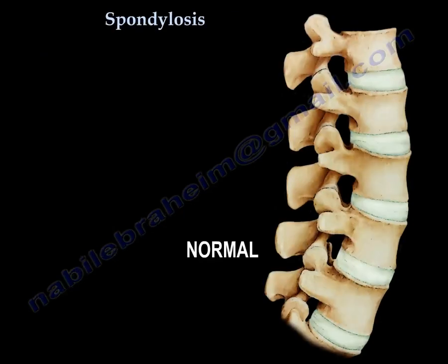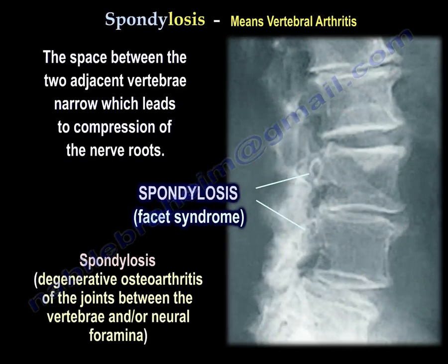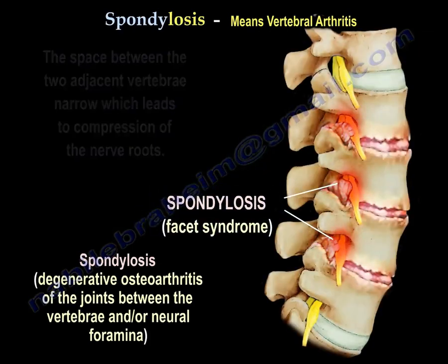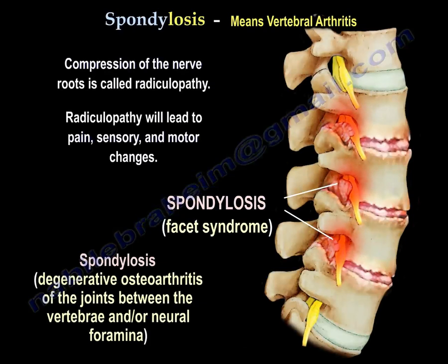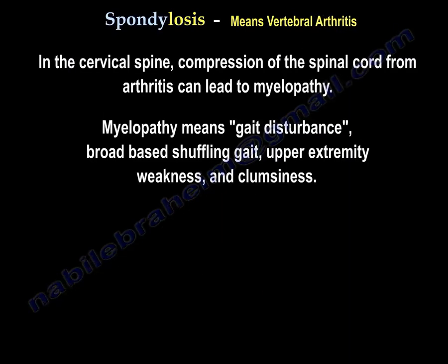How about spondylosis? Spondylosis is vertebral arthritis — degenerative arthritis of the joints between the vertebrae. It narrows the neural foramen, pinches the nerve, and causes radiculopathy. In the cervical spine, compression of the spinal cord from arthritis can occur and that will lead to myelopathy.